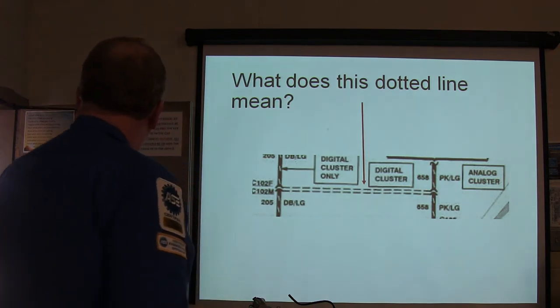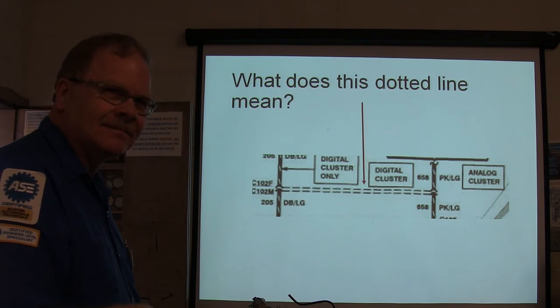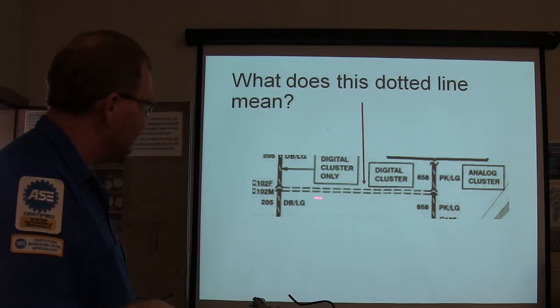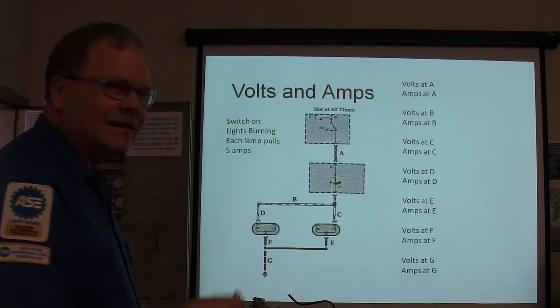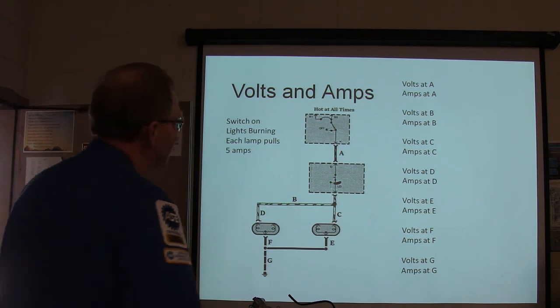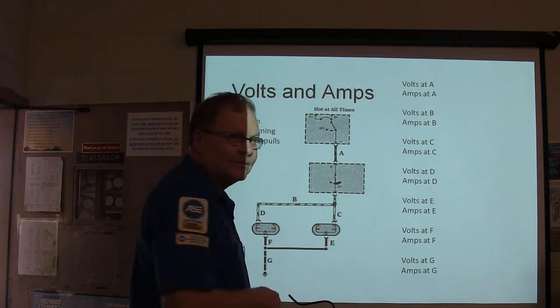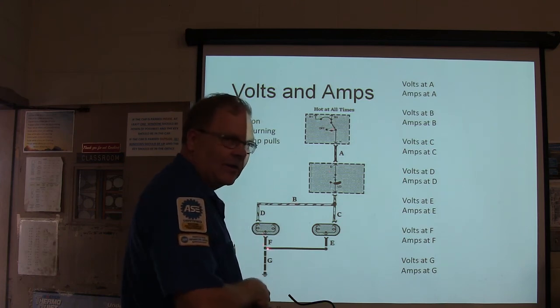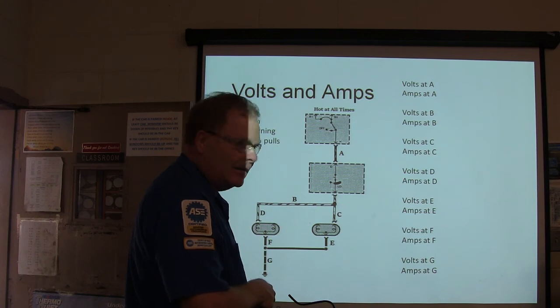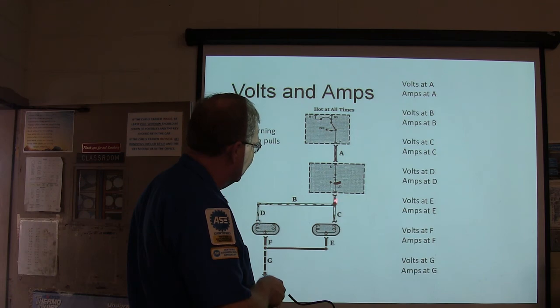All right. This is going to take just a half a second. 12 volts, look, 12 volts, 10 amps. Got it? All right. This one here, at B, 12 volts, 5 amps, because you're only feeding one light. Got it? 12 volts, 5 amps. Okay. C, 12 volts, 5 amps. You're always going to have 12 volts on this side.